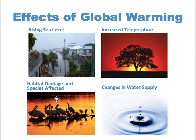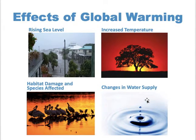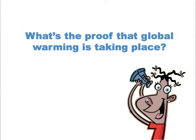Due to habitat damage, the amount of precipitation can become extreme, leading to surface water flooding. Of course, there are also changes in water supply — even with heavy precipitation, there can be drought. So there are significant changes in water supply. What is the proof that global warming is taking place?